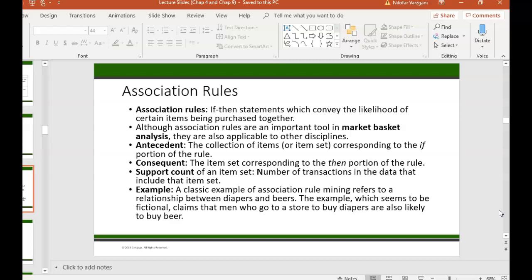And then there's a consequent which corresponds to the then portion of the rule. Then he will buy beer. So based on this if-then statement, you can devise strategies or help plan out the layout of your grocery store depending on how accurate this rule ends up being.